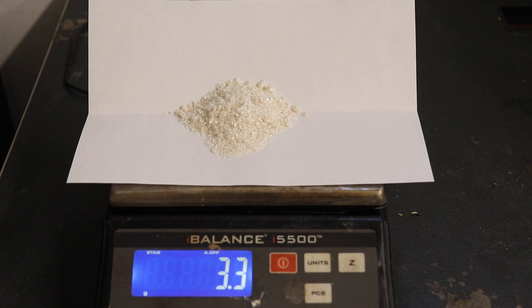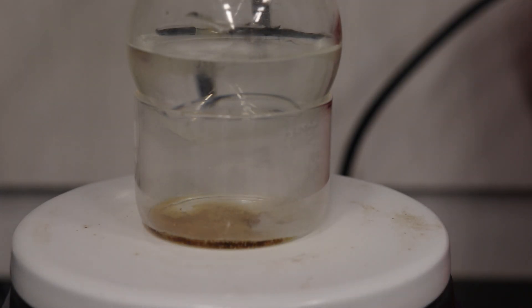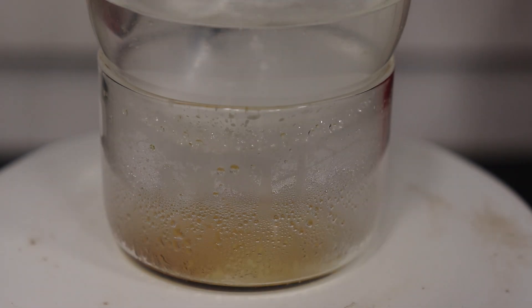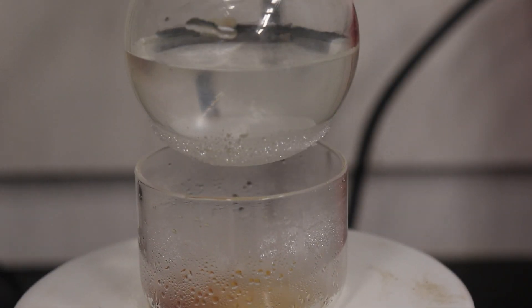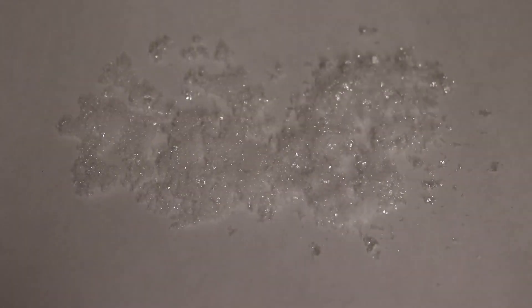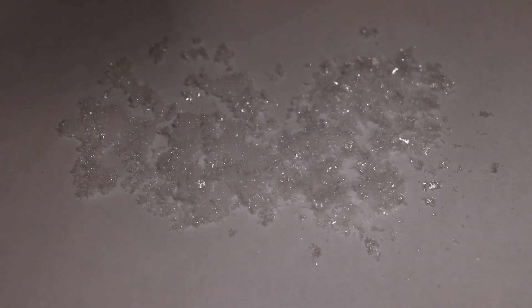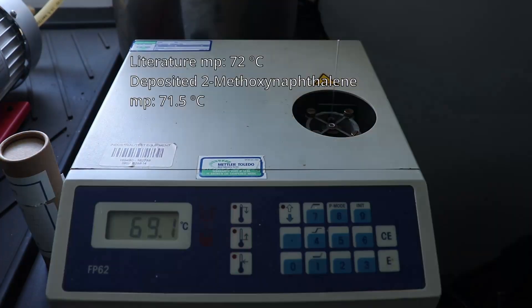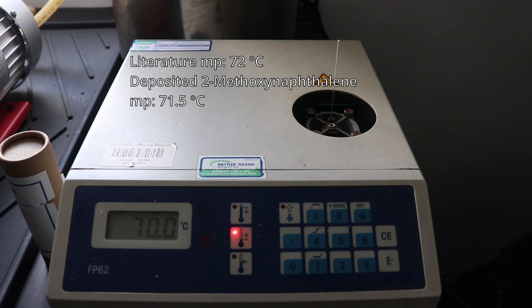I then wanted to try and prepare a highly pure sample of 2-methoxynaphthalene by the evaporation and deposition of the material onto the walls of a cold flask. I did this in an attempt to prepare a reference sample for the melting point value of 2-methoxynaphthalene, to which I could compare my other samples with. The crystalline material I recovered ended up having a melting point of 71.5 degrees Celsius, which is comparable both to the first sample and second sample.